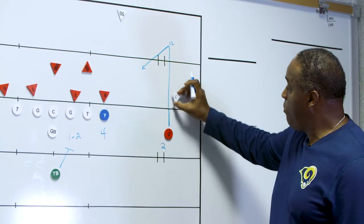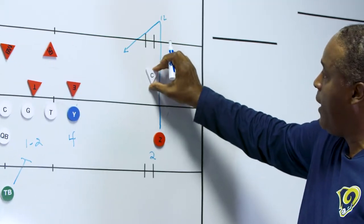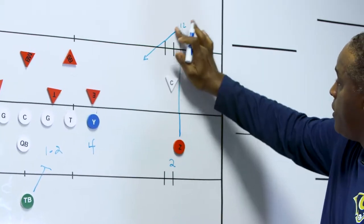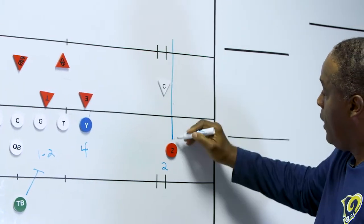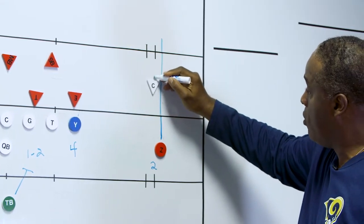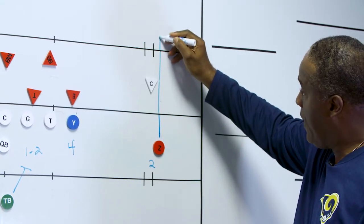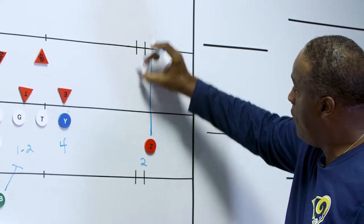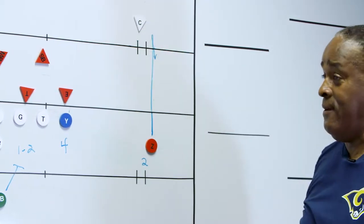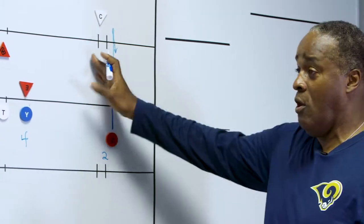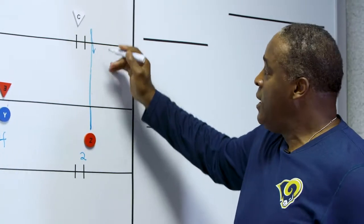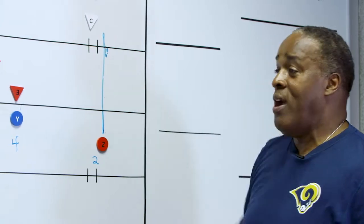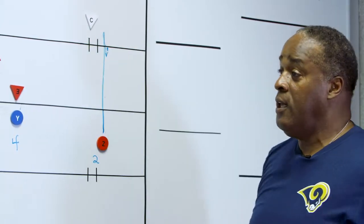If it was man coverage with the corner playing inside technique, the receiver — Jerry — would push straight up the field knowing the corner is inside, then plant at depth and come right back down the stem. The quarterback and receiver both have to see it, so that ball is going to be thrown to the outside shoulder off the technique of the corner.